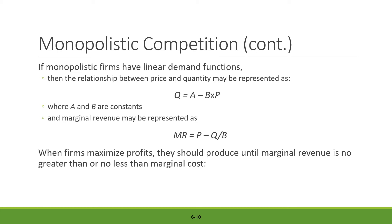When a firm maximizes its profit, it should produce until marginal revenue equals marginal cost. This condition is true for all market structures — perfect competition, monopoly, or monopolistic competition. Marginal revenue must equal marginal cost. Since the marginal cost equals c, we set MR = p − q/b equal to c. This gives us the profit-maximizing condition for the monopolistically competitive firm.